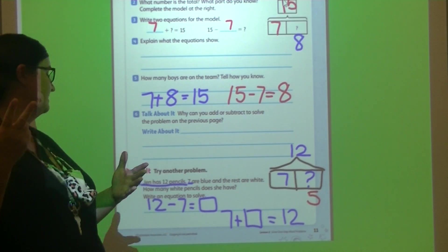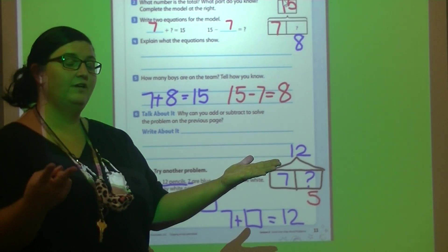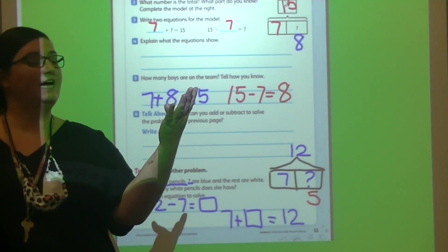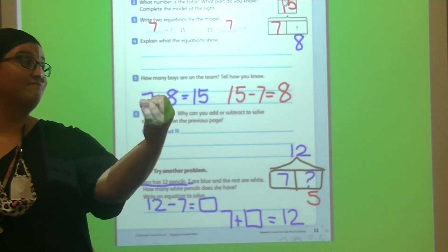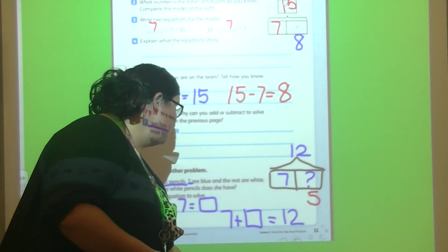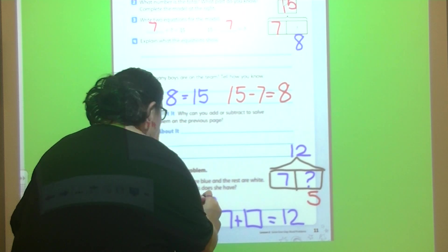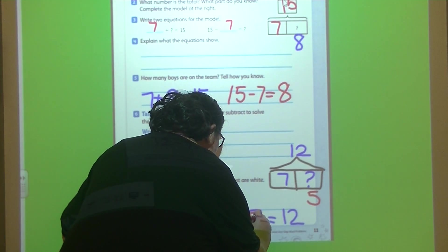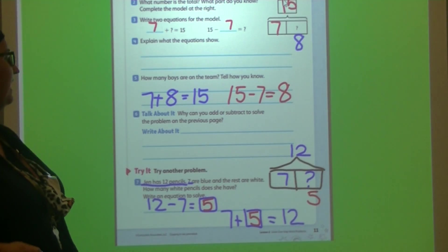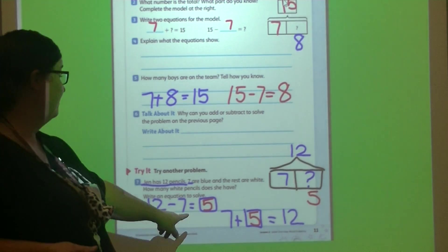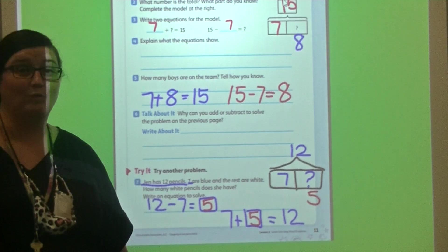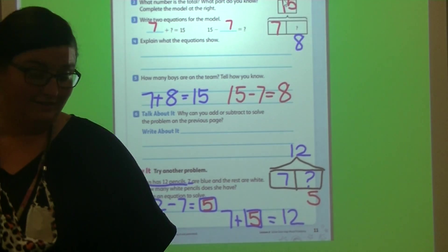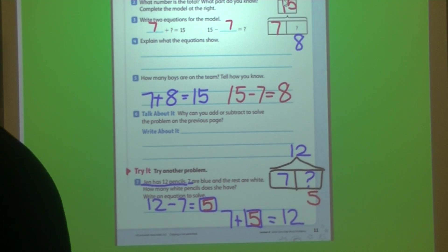Start with 12 and count back 7. 12, 11, 10, 9, 8, 7, 6, 5. Both times my answer was 5. So how many pencils were white? The answer is 5 pencils were white. 5 pencils were white.